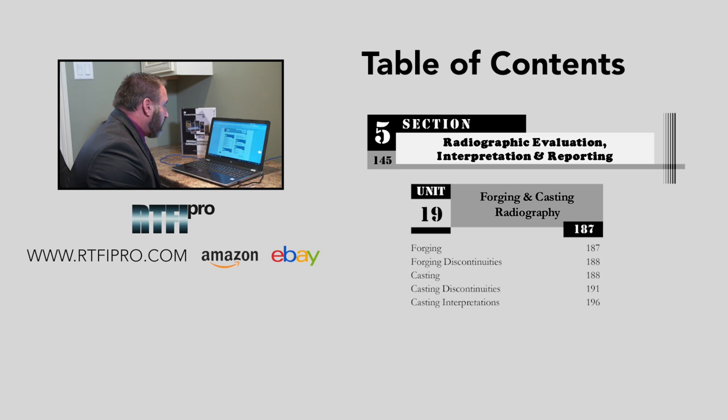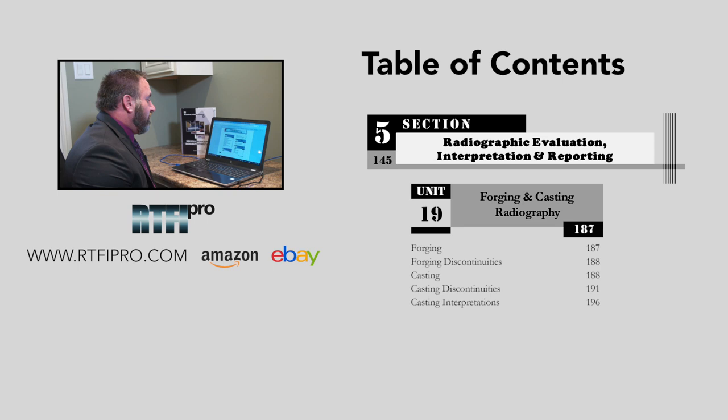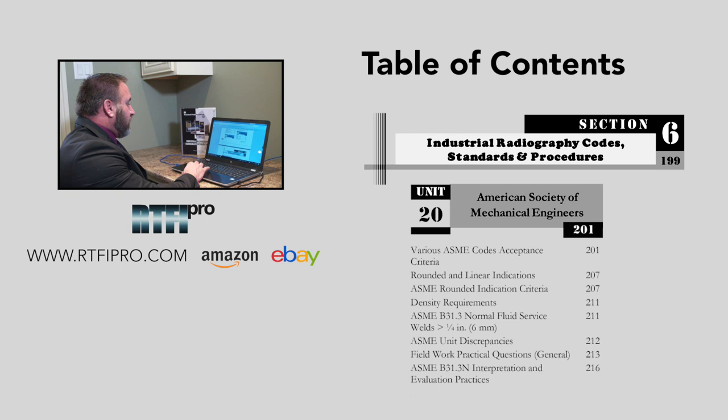Unit nineteen similarly addresses forging and casting radiography: forging, forging discontinuities, casting, casting discontinuities, and casting interpretations. We include radiographs of forgings and castings throughout.